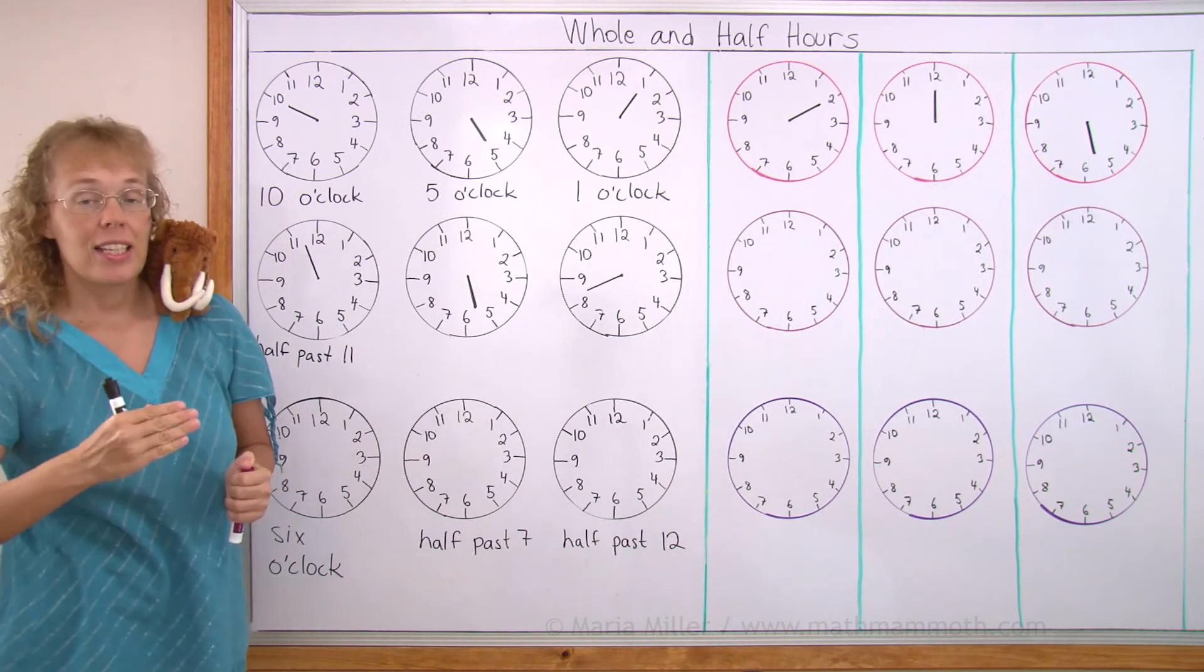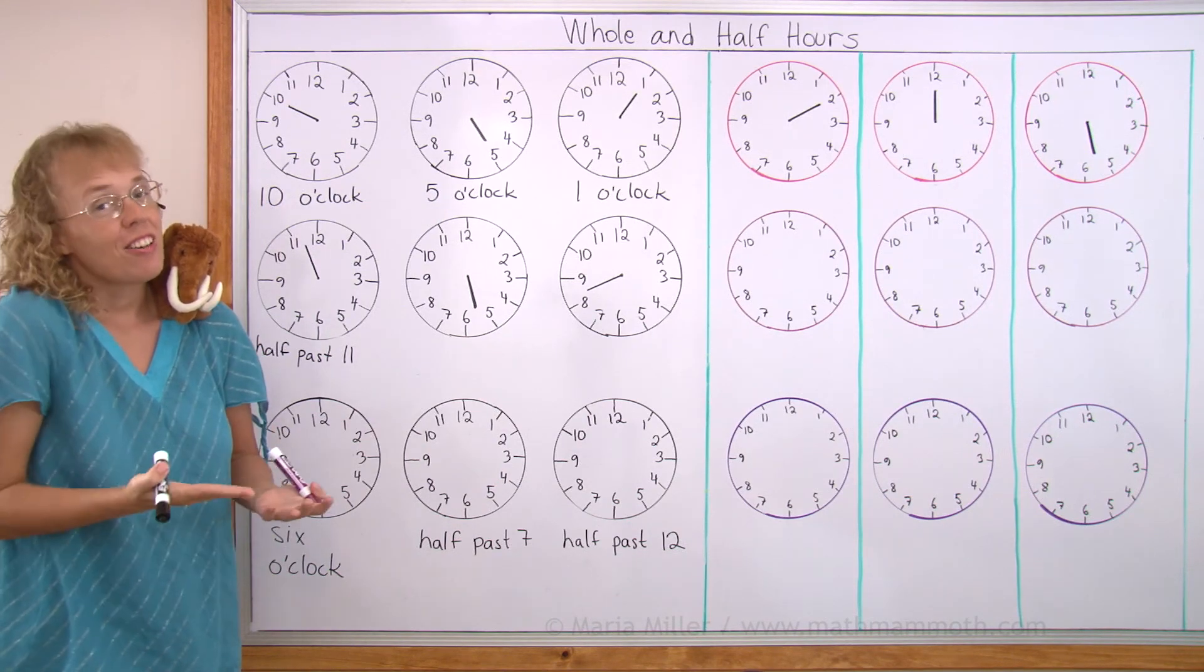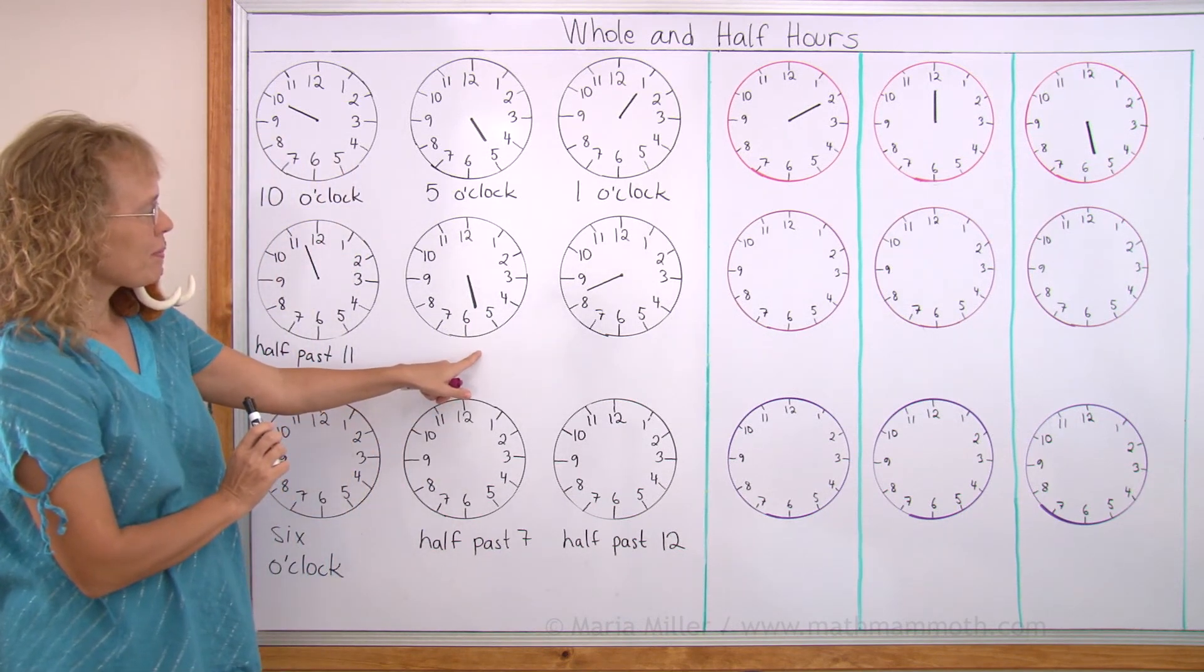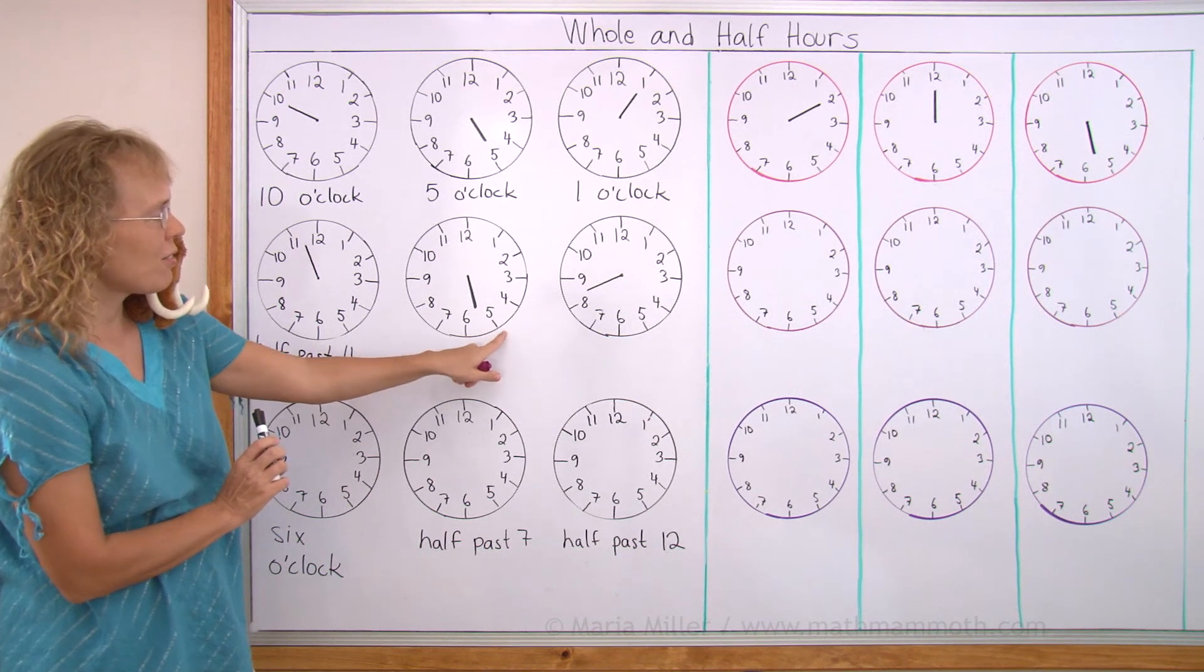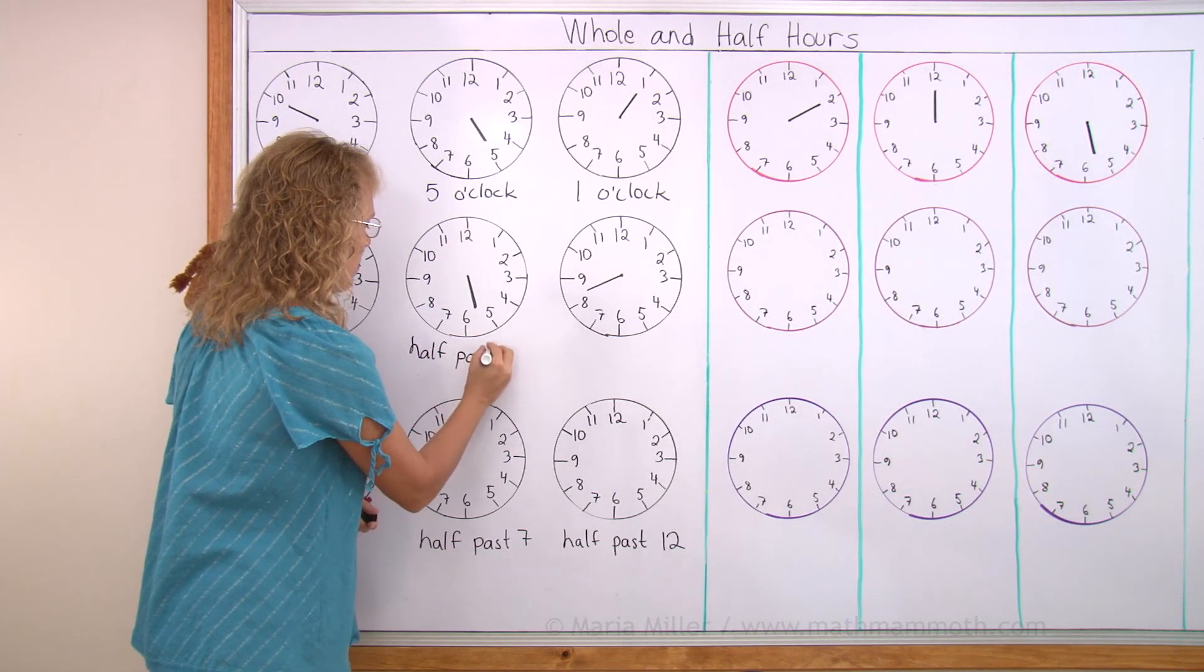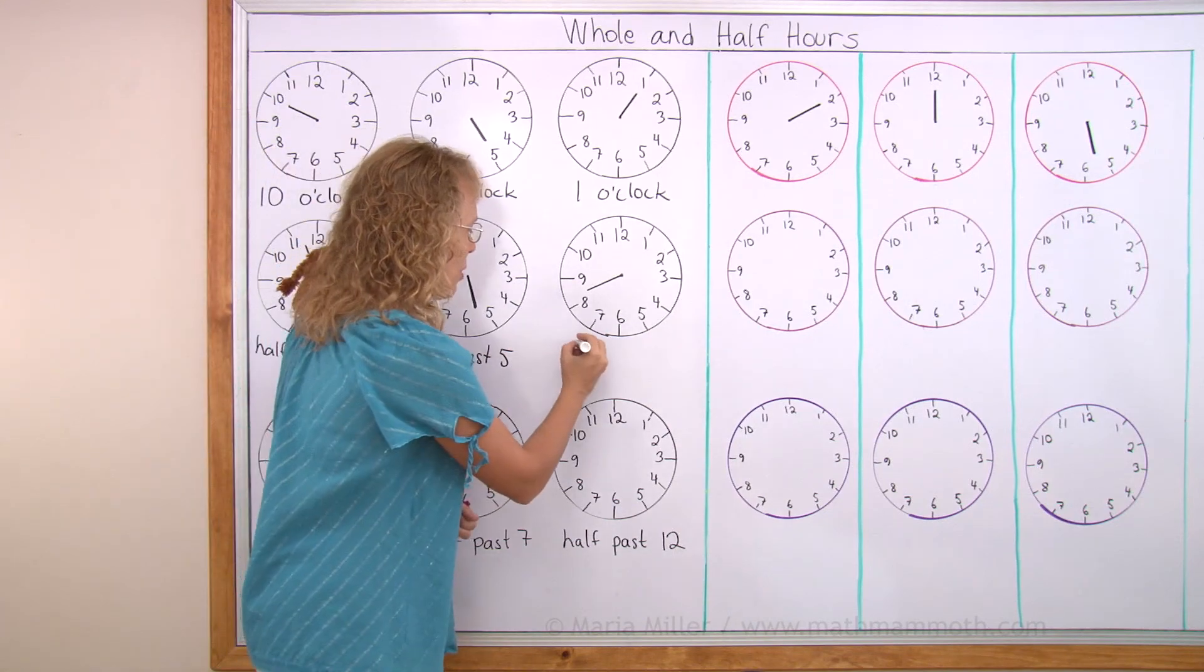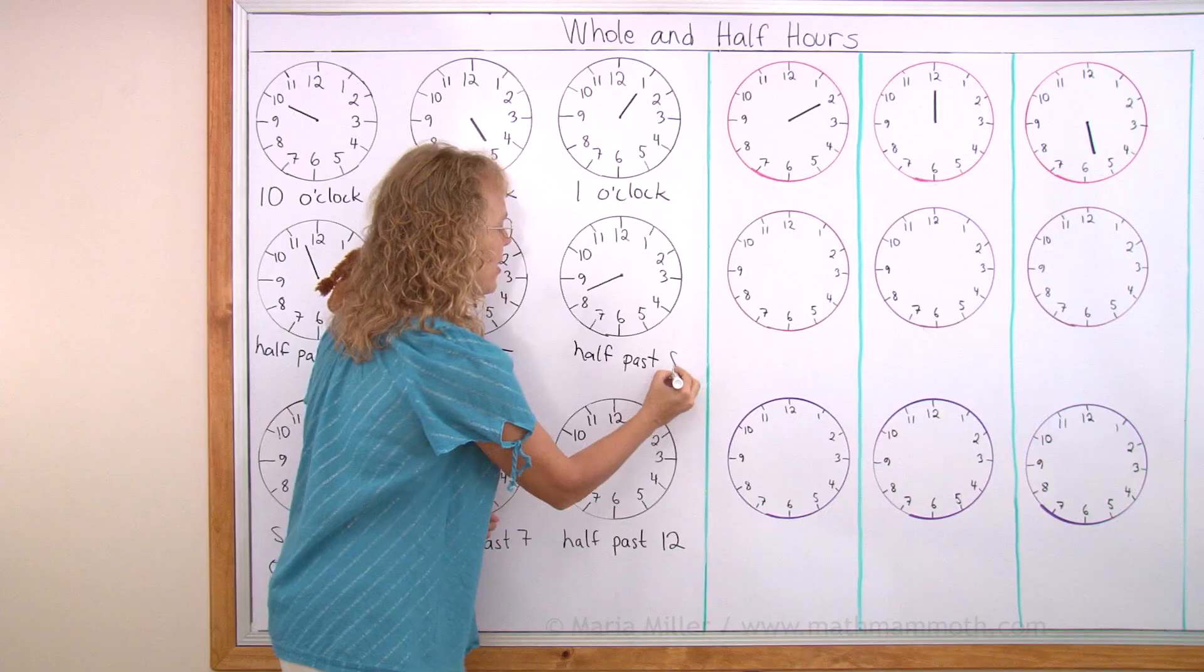It is exactly half an hour after 11 or it is 11 and a half hours. And over here, what time is it? OK, halfway between 5 and 6. That's 5 hours and half an hour. Half past 5. And over here, half past what? Half past 8.